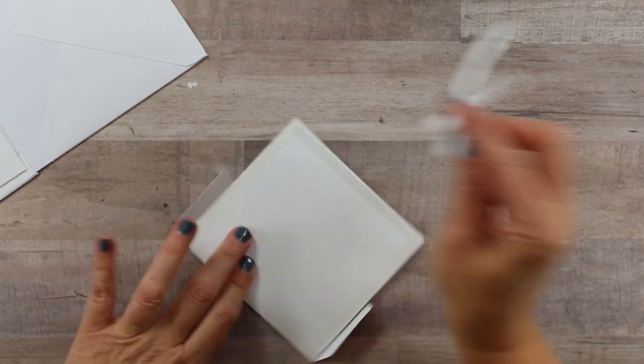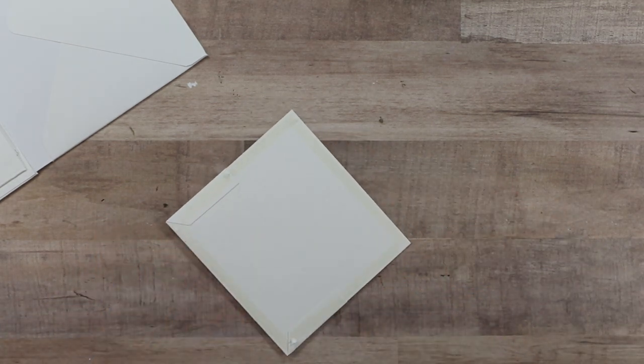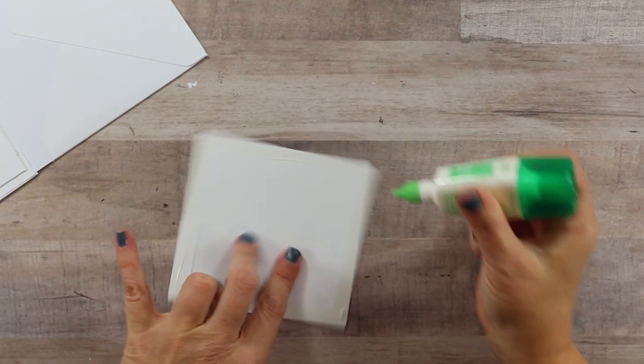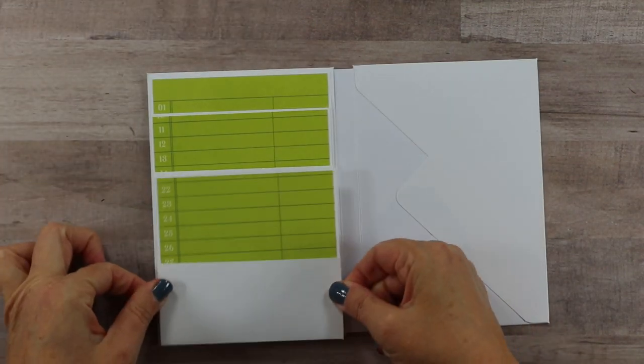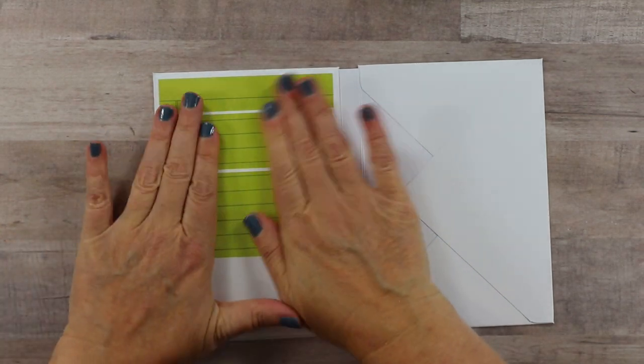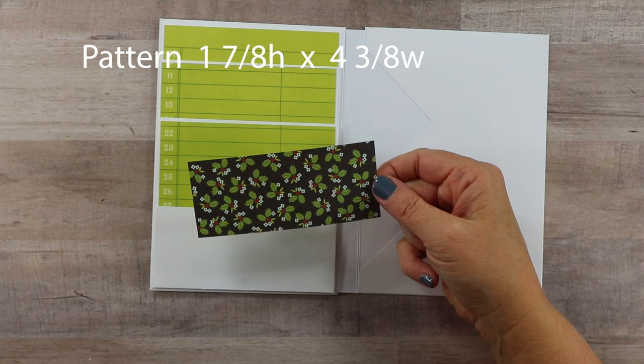This is another great place to consider working with your stash. As long as these papers coordinate, they don't need to come from the same collection. So once I get that last one in place, I'll grab a layering pattern for the pocket. This is going to be one and seven-eighths inch high by four and three-eighths.